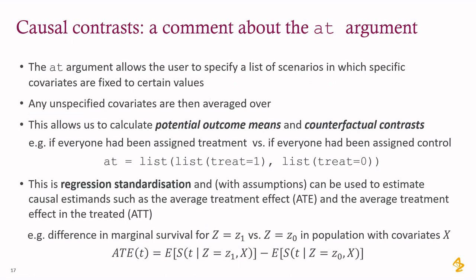The AT statement is quite important. It allows the user to specify a list of scenarios in which specific covariates are fixed to certain values, and any other covariates in the model are averaged over. This is often called regression standardization, and it's used a lot in causal inference. It gives us the opportunity to calculate potential outcome means and counterfactual contrasts — for example, if everyone had been assigned treatment versus if everyone had been assigned control.